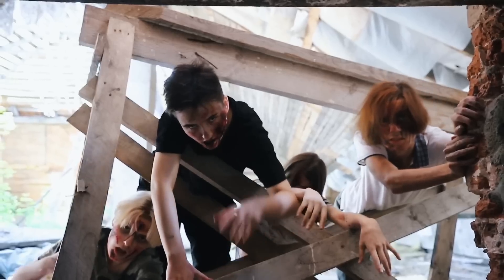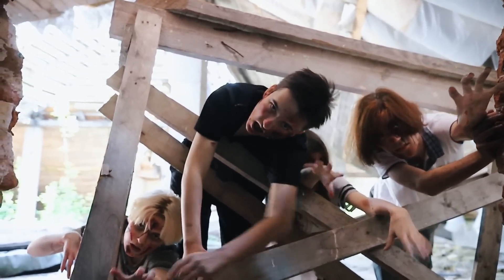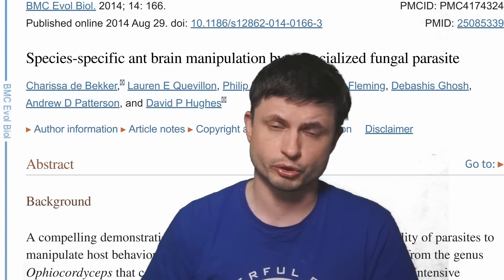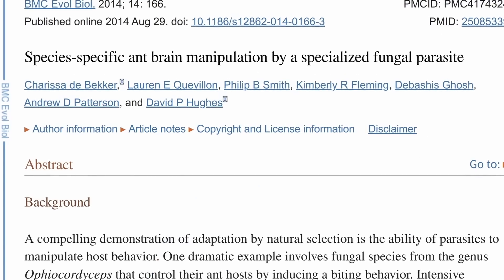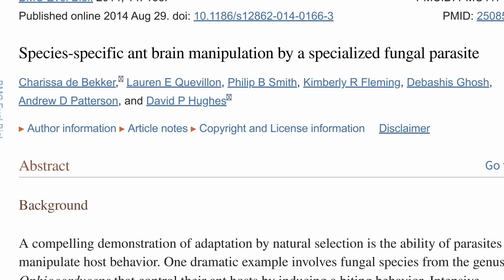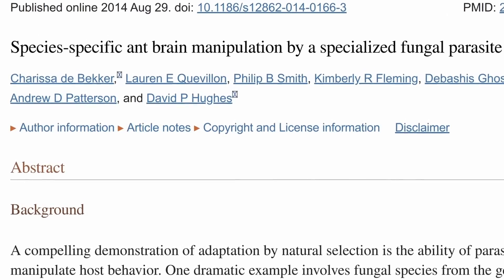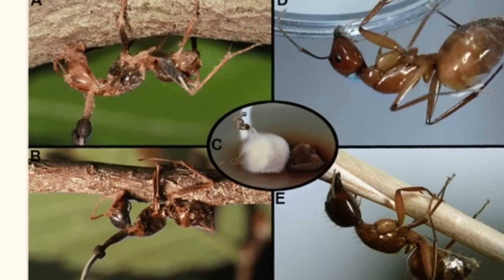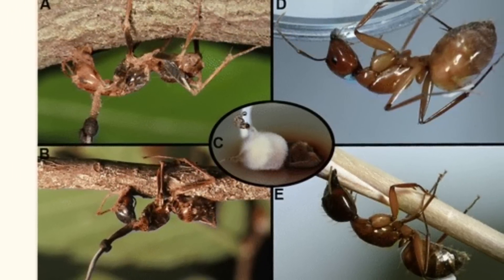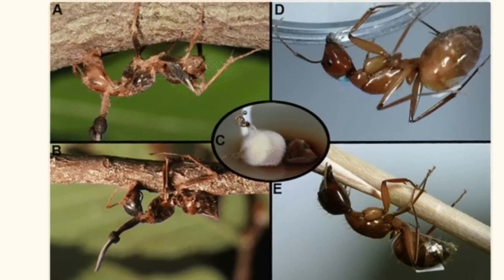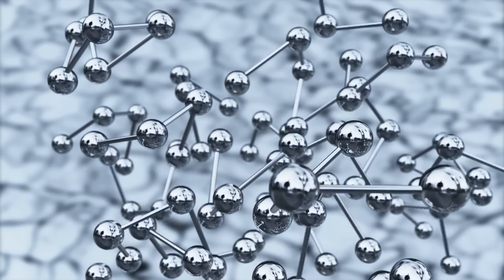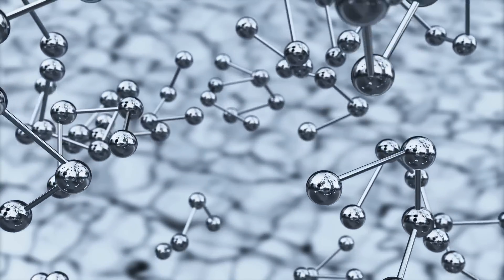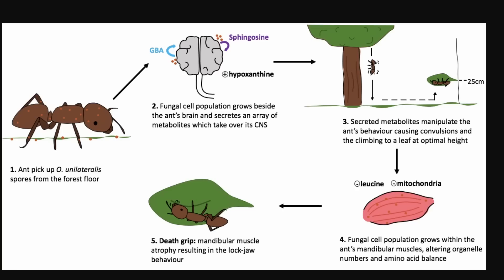Let's discuss this from the perspective of science — and by the way, there are going to be no spoilers about the TV show or the video game. A lot of these discoveries are somewhat recent; some of the first papers on this fungus and its effects on ants only started to come out about a decade ago, around the same time as the video game. In one such paper, scientists explored how Ophiocordyceps managed to evolve various compounds to influence various behaviors in specific types of ants.